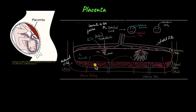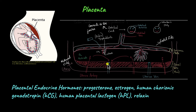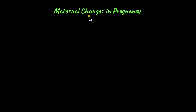Apart from providing the fetus with nutrients, the placenta also acts as an endocrine organ and produces several hormones like progesterone, human chorionic gonadotropin (HCG), and relaxin. These hormones play an important role in maintaining pregnancy. For example, progesterone is needed to maintain the endometrial lining of the uterus. HCG is excreted in the urine and is what is tested by home pregnancy kits. Other hormones like thyroxin are also produced in greater quantities during pregnancy to compensate for the increased metabolism of the mother.